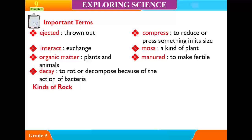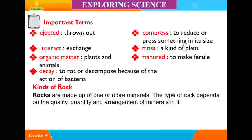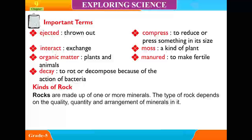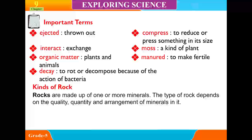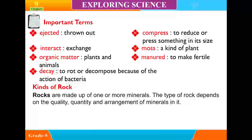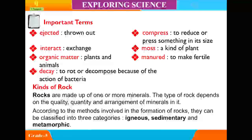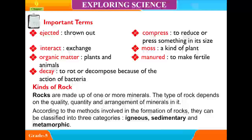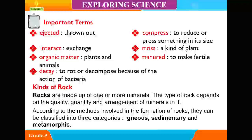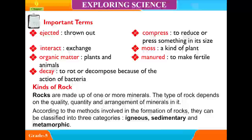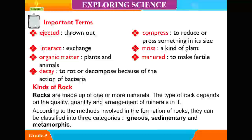Kinds of Rocks. Rocks are made up of one or more minerals. The type of rock depends on the quality, quantity and arrangement of minerals in it. According to the methods involved in the formation of rocks, they can be classified into three categories: Igneous, Sedimentary and Metamorphic.